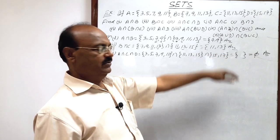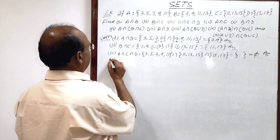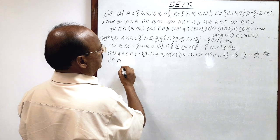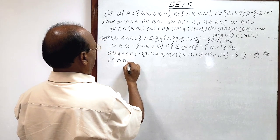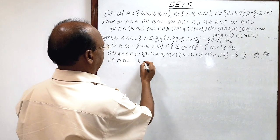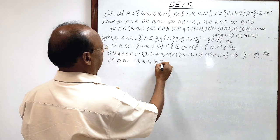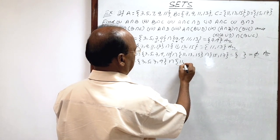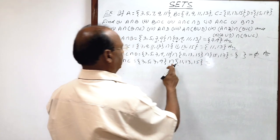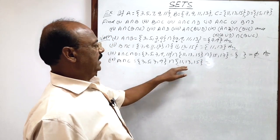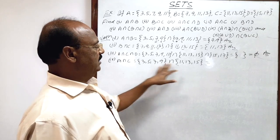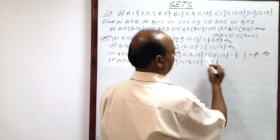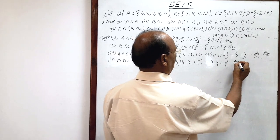Fourth part: A intersection C. Set A has elements 3, 5, 7, 9, 11 and set C has elements 11, 13, 15. We collect common elements from these two sets. There is no element common to both sets, so this is again a null set — an empty set denoted by phi (φ). This is the answer.